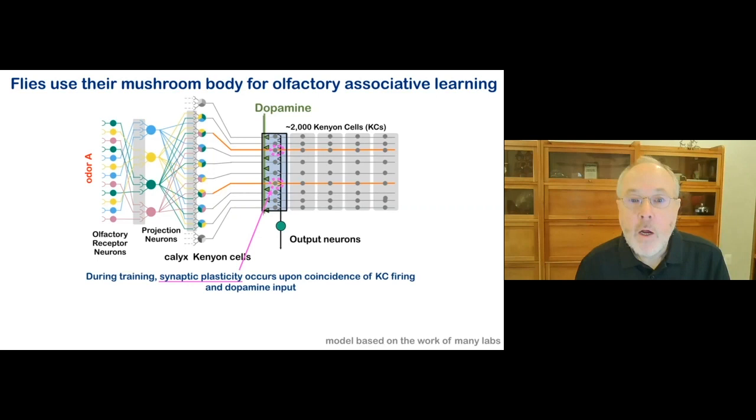During training, like I showed you in the movie, synaptic plasticity occurs at synapses where there's a coincidence of Kenyon cell firing representing the odor and dopamine release representing, in this case, a punishment. This change in strength of the synapses between the Kenyon cells that represent a particular odor and the output neuron is the physical manifestation of the memory. It's the change in the brain that records the memory. This, in turn, decreases signaling from the output neuron from that compartment.